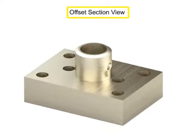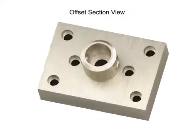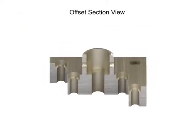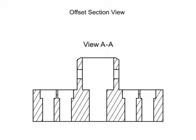An offset section results when the cutting plane line is bent to show internal features that are not in a straight line. The bends in the cutting plane are not shown in the section view.